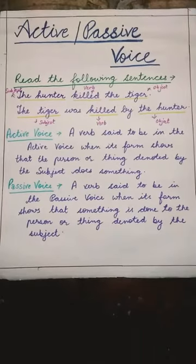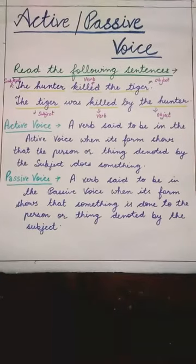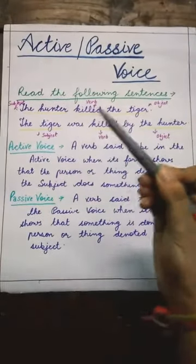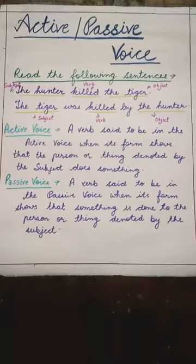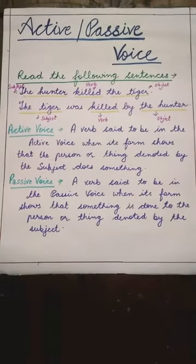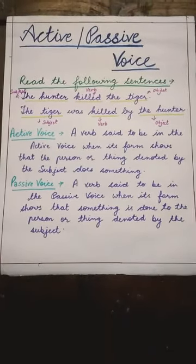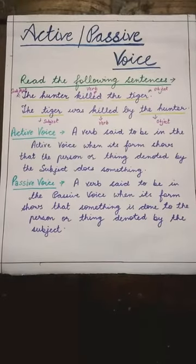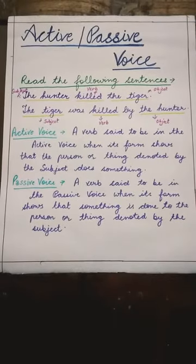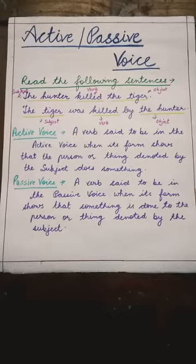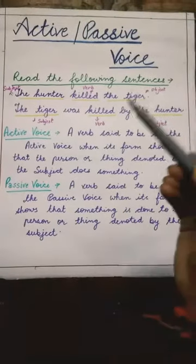To understand both these terms, let's read some sentences. 'The hunter killed the tiger' — शिकारी ने शेर को मारा. 'The tiger was killed by the hunter' — शेर शिकारी के द्वारा मारा गया. इन दोनों sentences का meaning एकदम same है. But जो sentence one है, उसमें form of verb show करती है कि जो subject है — the hunter — उसने एक action perform करा है object पर, जो की है the tiger. That's why the first sentence is in active voice.